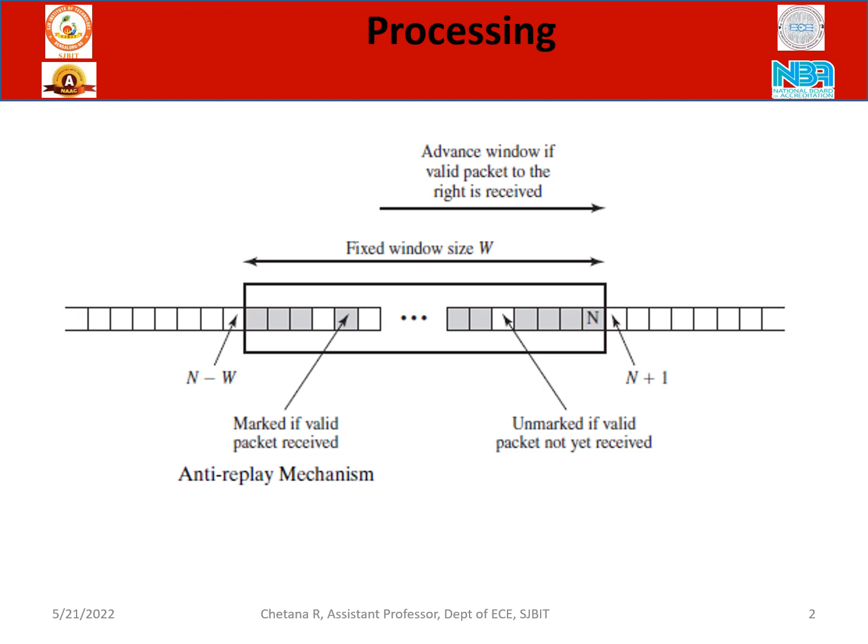We have the anti-replay mechanism working here. The sender is sending the packets and the receiver is receiving them. A fixed window size is there — it is capital N, equal to 64. The window advances if a valid packet to the right is received. Once you send the packet, it moves towards it. After sending this packet, the window will just shift. Every time, it will have a capability of receiving 64 packets.